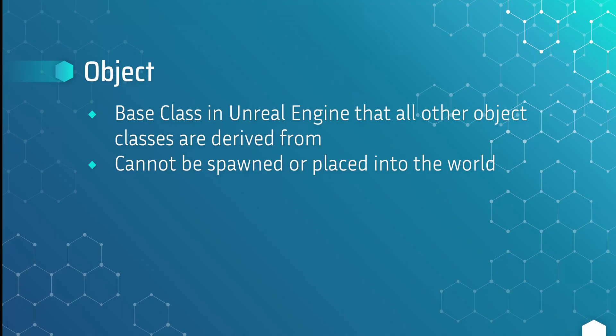The first class we'll discuss is Object, and this is the base class in Unreal Engine that all other objects are derived from — so everything in Unreal Engine pretty much derives from Object. Now objects can be useful in some situations, but they are very limited in what they can do. They cannot be spawned or placed into the world, and they can't be attached to other actors, so they have very limited functionality.